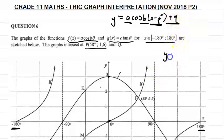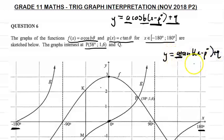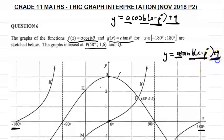For the tan graph: y = a·tan(b(x − p°)) + q. Remember tan has no amplitude — the range is from minus infinity to infinity. The period of a tan graph is 180/b. x minus p is a horizontal translation of p degrees right; x plus p is p degrees left. Plus q is q units up and minus q is q units down.